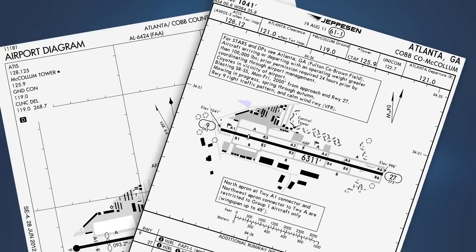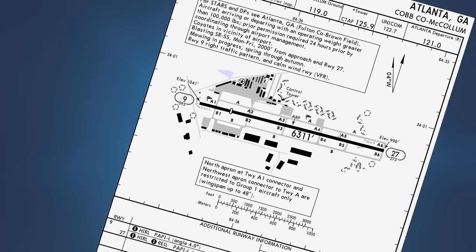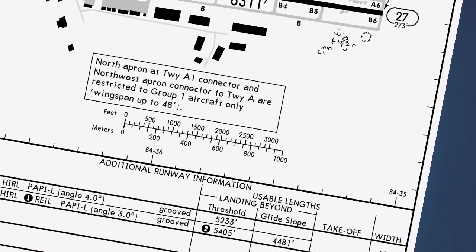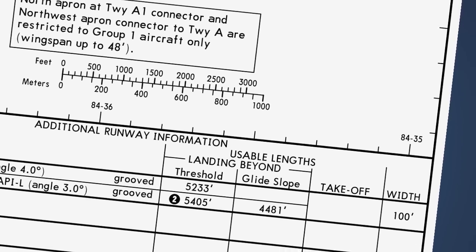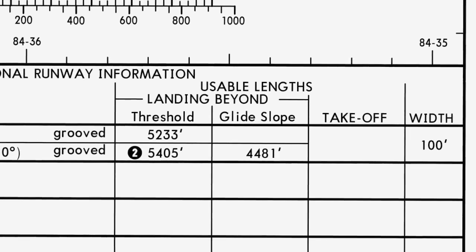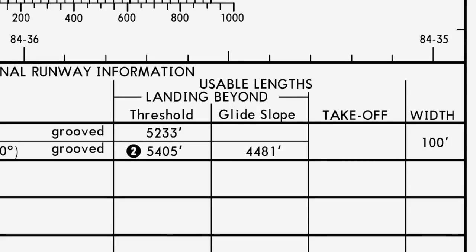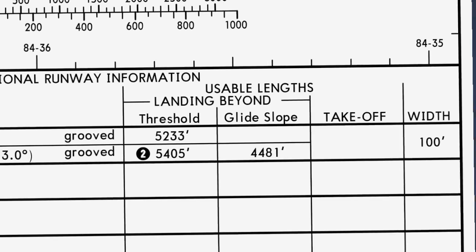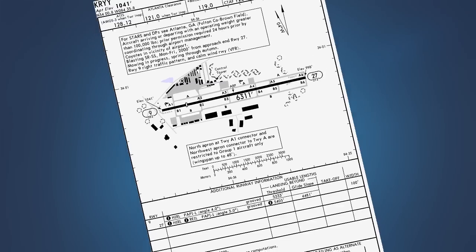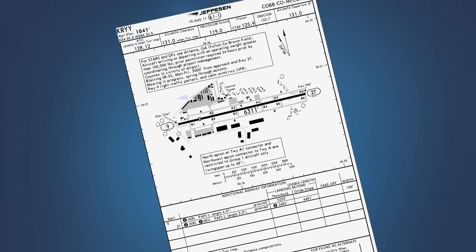A number of business airplane operators use airport diagrams and instrument approach procedure charts furnished by a commercial provider, for example, Jeppesen. On their charts, Jeppesen publishes usable runway lengths, not declared distances. The usable length concept was created many years prior to the formal creation of the declared distance concept and continues to be published on their charts in lieu of declared distances. Usable length takeoff is almost identical to takeoff run available, and usable length landing beyond threshold is similar to landing distance available, but they are not takeoff run available and landing distance available, and Jeppesen does not incorporate anything similar to accelerate stop distance available and takeoff distance available on these charts.